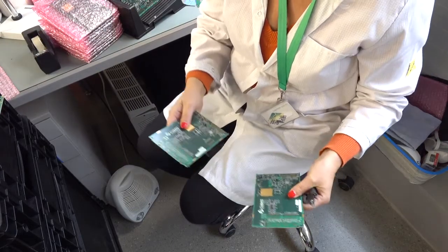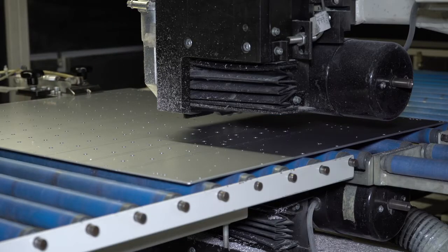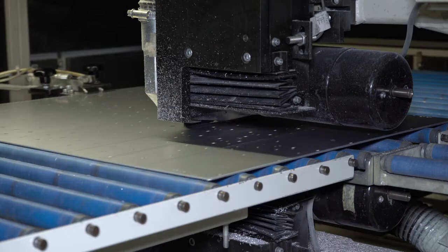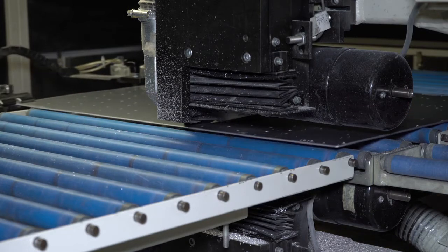When panels are v-cut we use a depaneliser with rotating knives. Now the assembled boards are ready for delivery.